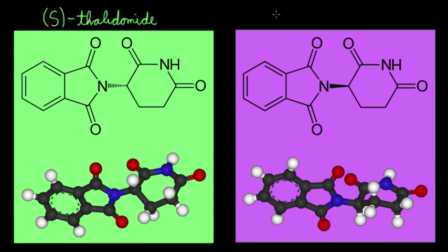Here we have a set of enantiomers. This is the S conformation of thalidomide, and here on the right is the R conformation. Why does it matter that we have two different conformations?